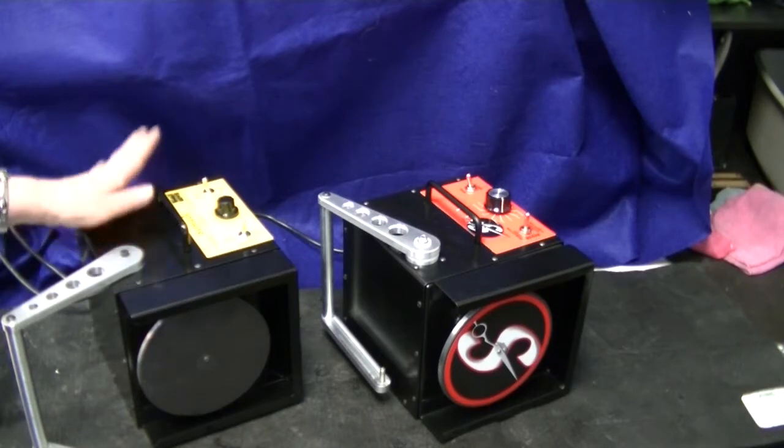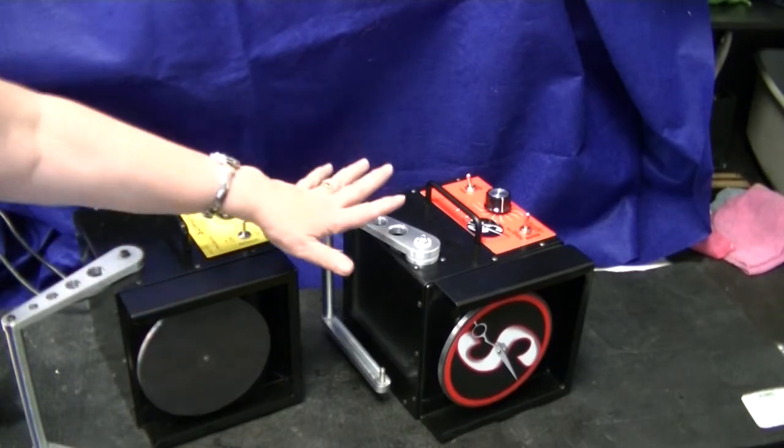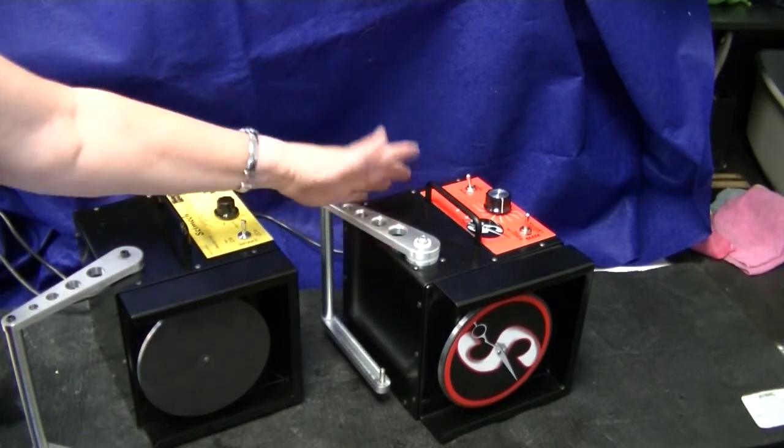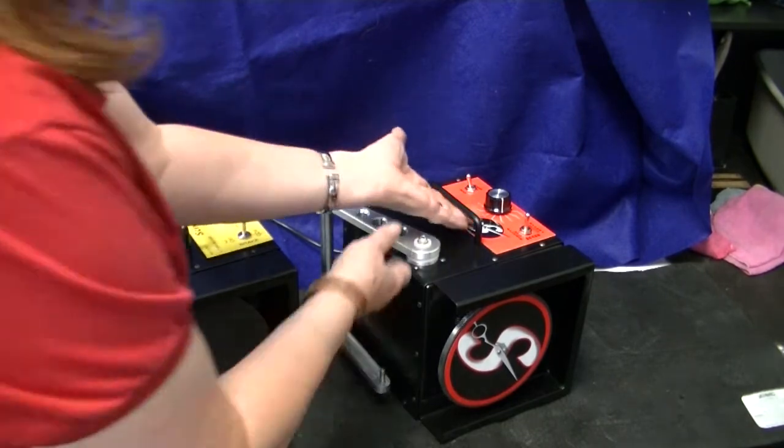Another difference between the original Cymec and the Cymec HD is the Cymec HD is going to be heavier. It's about four pounds heavier.